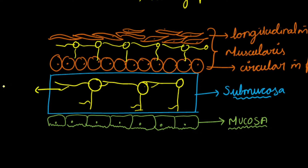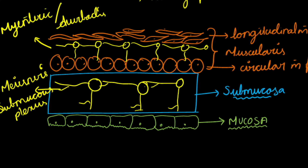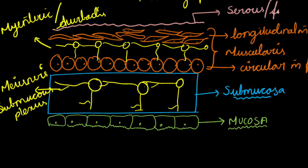In between the longitudinal muscle fold and the circular muscle fold, we have the myenteric nerve plexus — the submucosal plexus is Meissner's plexus and the myenteric nerve plexus is Auerbach's plexus. The outermost layer is the serous or fibrous layer.